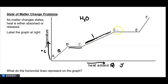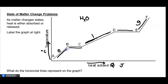Then you hit a certain temperature at which the graph levels out again with no temperature change. Energy continues to be added, and here from E to F we have a gas, just going to increase in kinetic energy. Along these diagonal lines there's a temperature change, which means there's an increase in average kinetic energy of these water molecules.